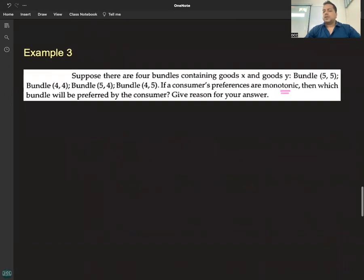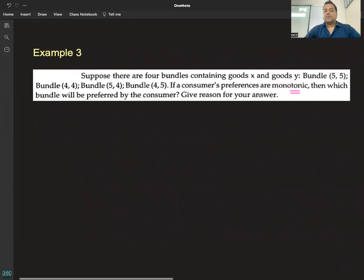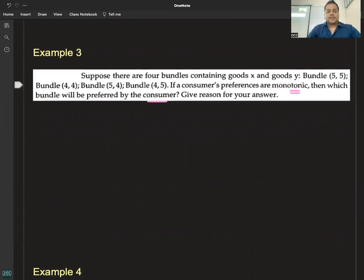a consumer's preferences are monotonic, then which bundle will be preferred by the consumer? The answer is (5,5). If the consumer